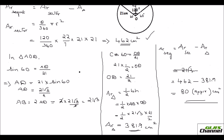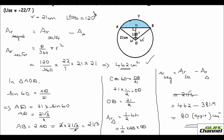To summarise: first find the area of the sector, then find the base and height of the triangle using trigonometry and apply the formula ½ × base × height. Then subtract the area of the triangle from the area of the sector to get the area of the segment.